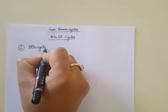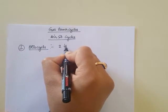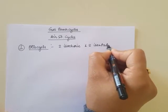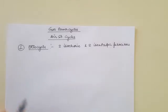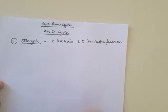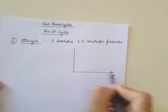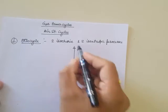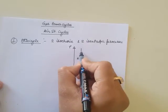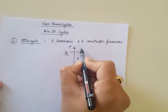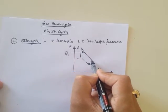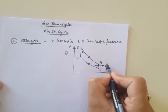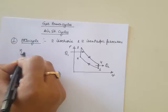Let us take the first cycle, that is the Otto cycle. The Otto cycle comprises two isochoric processes and two isentropic processes. Here is one in front of you in the PV diagram. Firstly, air is compressed isentropically from 1 to 2, then heat is added isochorically from 2 to 3, then expansion work is done isentropically from 3 to 4, and then from 4 to 1 heat is rejected isochorically.